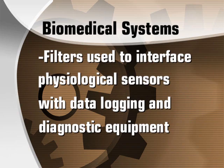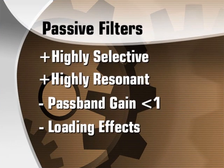We recall that passive filters contain only resistors, capacitors, and inductors. And although these circuits can be highly selective when losses are low and the response is highly resonant, they suffer from passband gains no greater than one. In addition, they suffer from loading effects, which makes the chain rule in cascade design inapplicable.